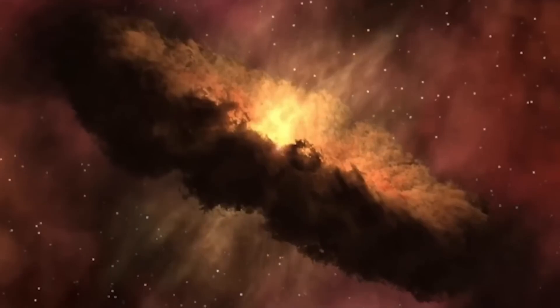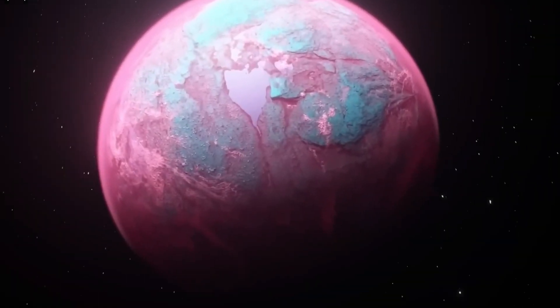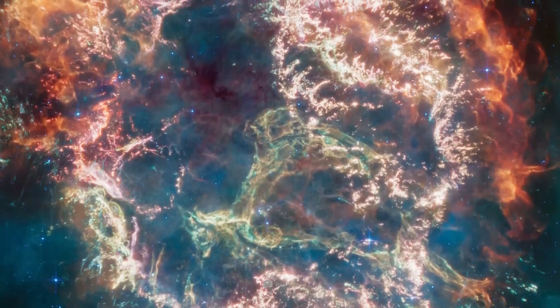The inner shell of the structure, which consists of sulfur, oxygen, neon, and argon, among other elements, can be seen in bright orange and pale pink.